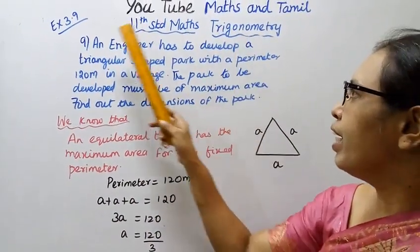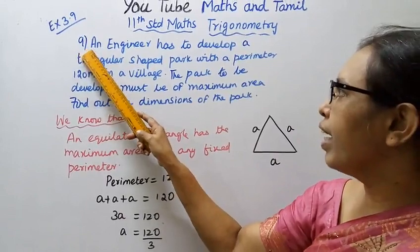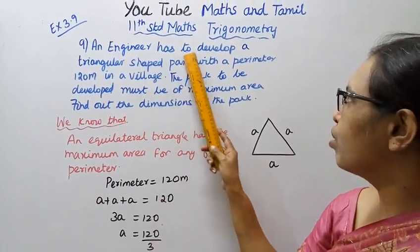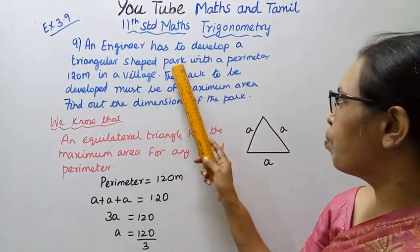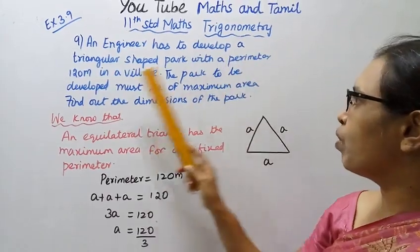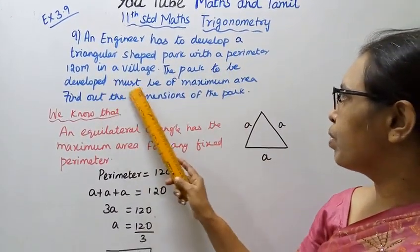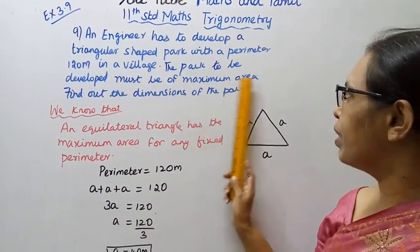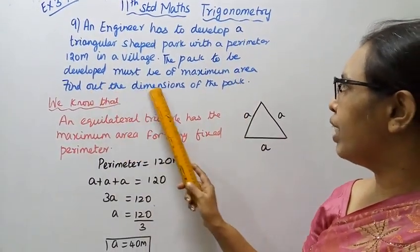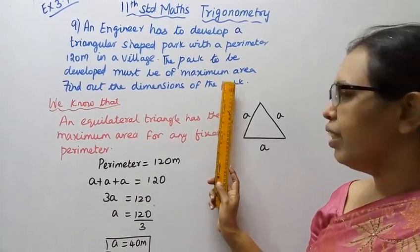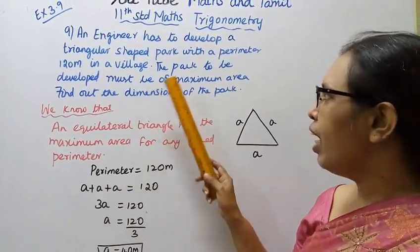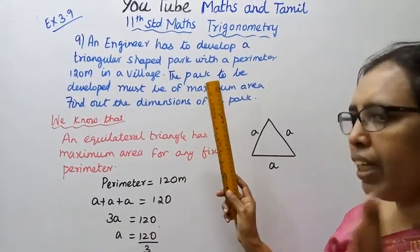11th standard Maths Trigonometry exercise 3.9. Question 7: An engineer has to develop a triangular shaped park with a perimeter 120 meter in a village. The park to be developed must be of maximum area. Find out the dimensions of the park.